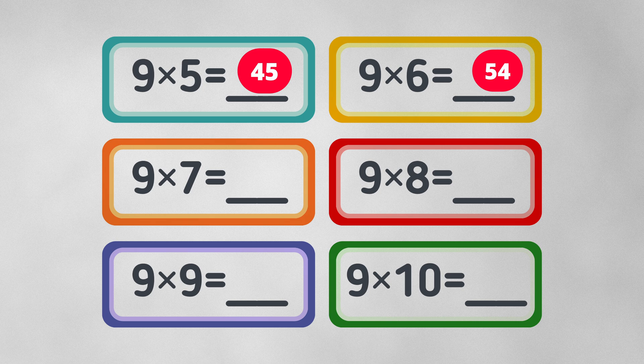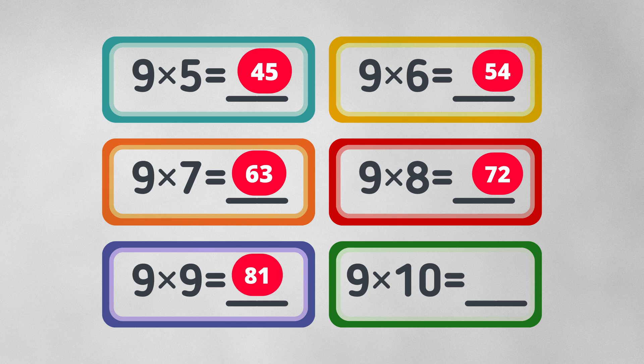Nine times seven equals sixty-three. 9 times 8 equals 72. 9 times 9 equals 81. 9 times 10 equals 90.